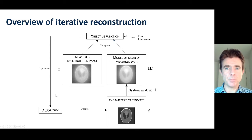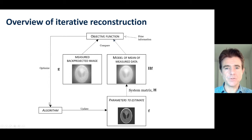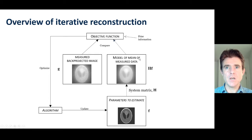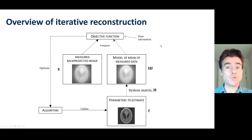Then we plug it into some optimization algorithm, nearly always related to the gradient of the objective function. With least squares, it's going to be gradient descent; with maximum likelihood, it's going to be related to gradient ascent. That allows us to update the parameters such that when we run them through the system model again, it now has a different model of the mean, which hopefully agrees better with the measured data, subject to any prior information which can act as a penalty.